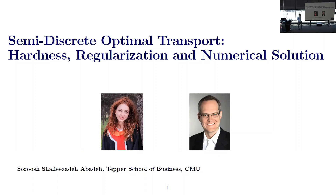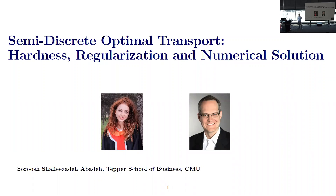Today I'm going to speak about semi-discrete optimal transport problems, which involves the computation of optimal transport costs between a continuous distribution and a discrete distribution. I will present some hardness results, then a regularization scheme, and after that some iterative algorithms that can be used to efficiently solve this class of optimization problems. This is joint work with my fantastic collaborators, Bauer Toshkoshen and Daniel Kuhn from EPFL.